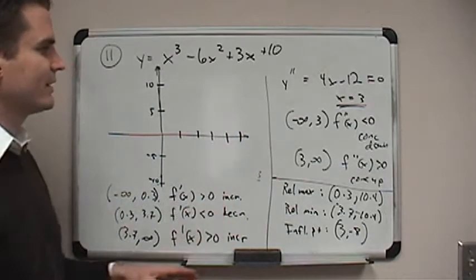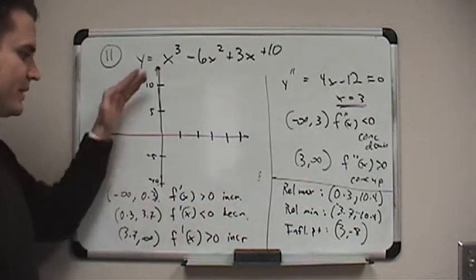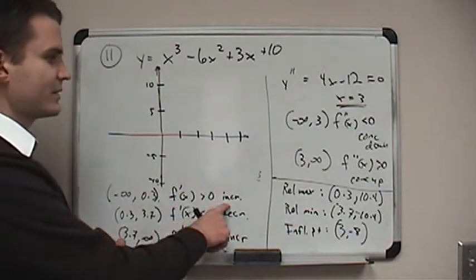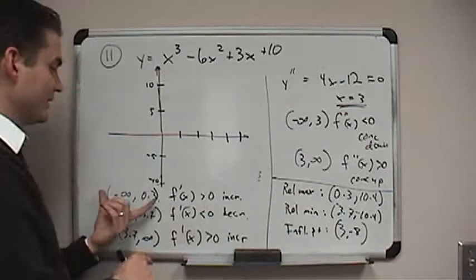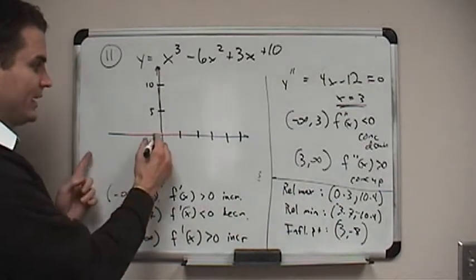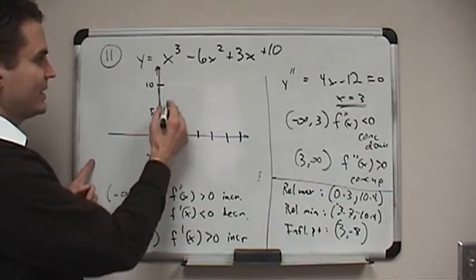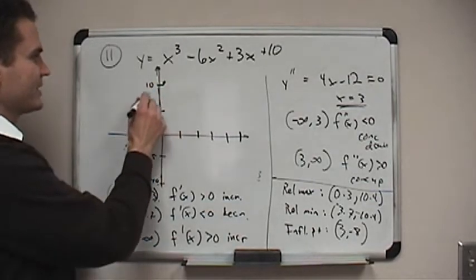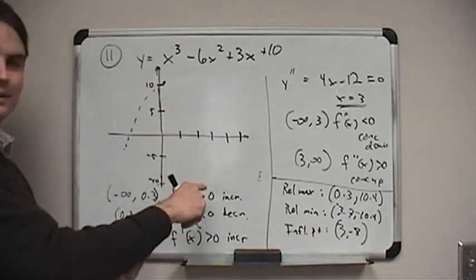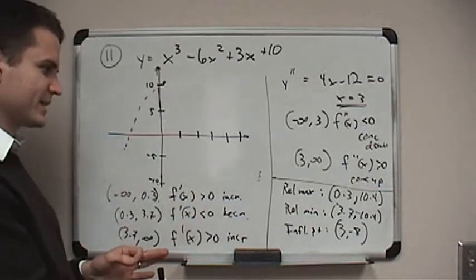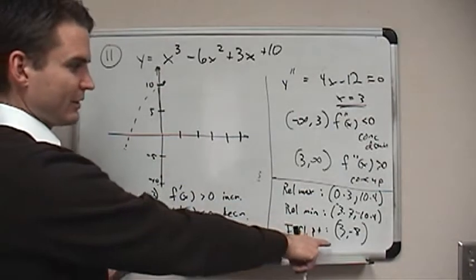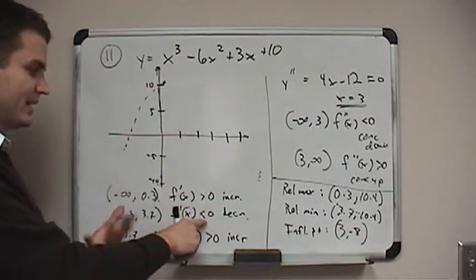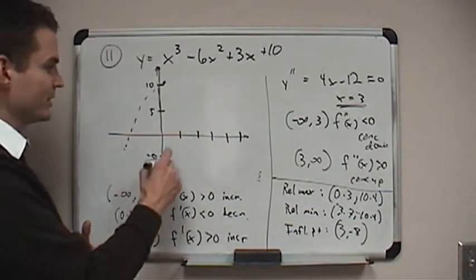So what do we see? Well, we see that the function is increasing and then decreasing and increasing. So it increases until it gets to that relative maximum, right? It increases until x is 0.3. So 0.3 comma 10.4, right about here, we have that maximum. So our function is increasing and then at that point it's decreasing. And it decreases until we get to 3.7, which is where we have our relative minimum. It's decreasing between 0.3 and 3.7.